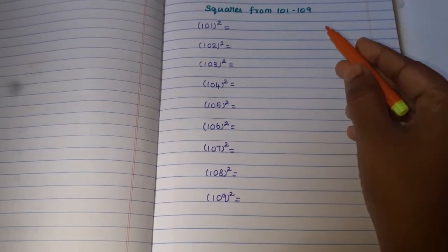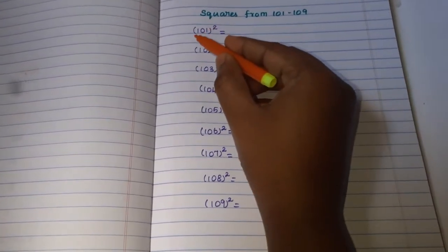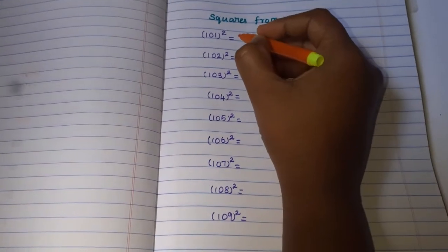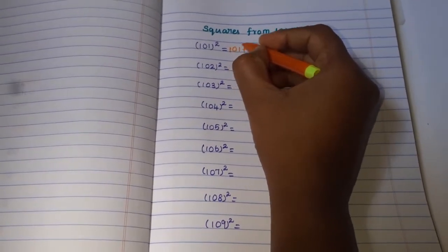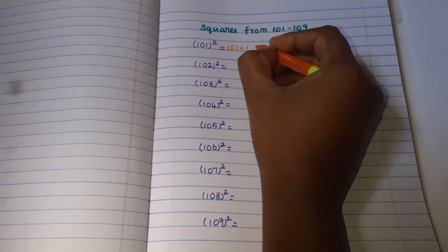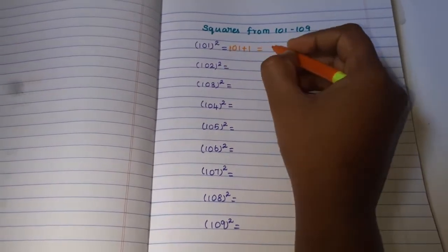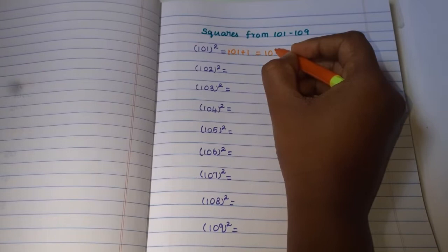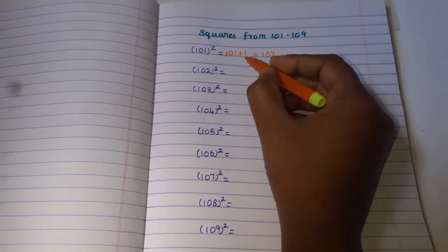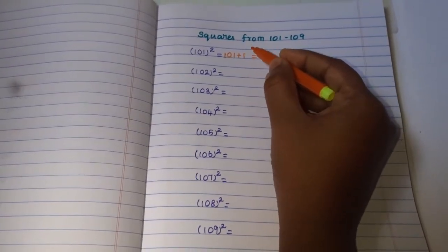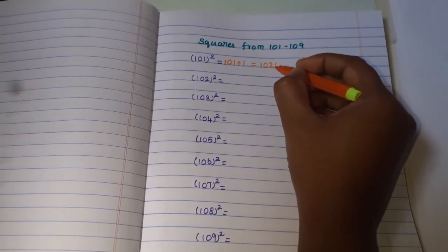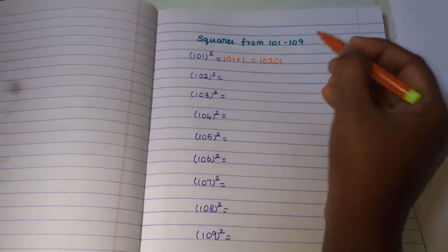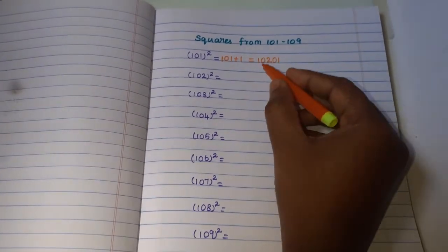Squares from 101 to 109. 101 square: write the given number 101 plus unit place 1. Add the 101 plus 1 is 102. Then 1 square value, 1 square is 1, so write in 2 digits: 01. Answer is 10201.